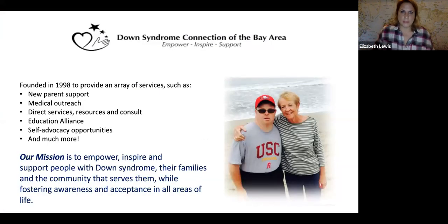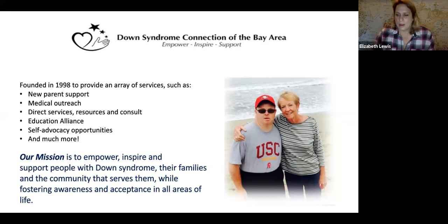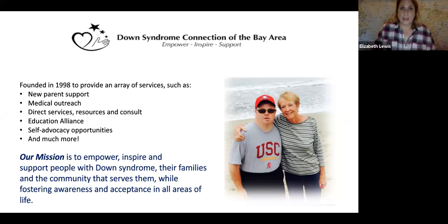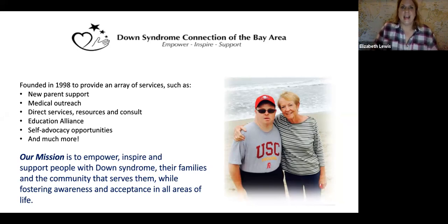The Down Syndrome Connection of the Bay Area was founded in 1998. You'll see a picture of Miss Martha and her son Blair. When Blair was a youngster, Martha decided to start Down Syndrome Connection of the Bay Area. She wanted to provide a place of community support — for family members who had children or family members with Down syndrome — just a place for people to connect and understand a little bit more about the struggles and successes they were going through.